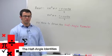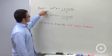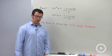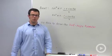I want to use the power reduction formulas to derive the half angle formulas. Recall the power reduction formulas: cosine squared alpha equals 1 plus cosine 2 alpha over 2, and sine squared alpha equals 1 minus cosine 2 alpha over 2.